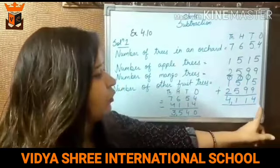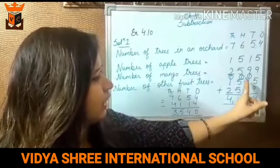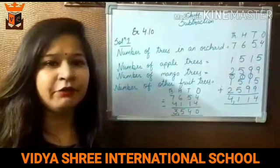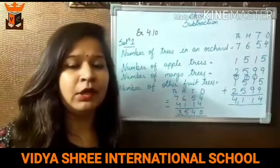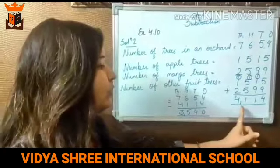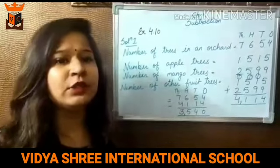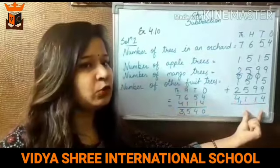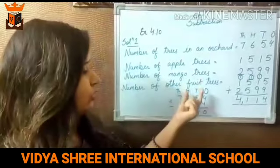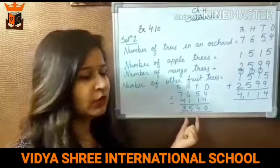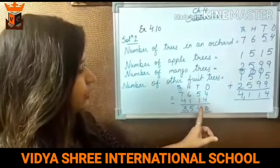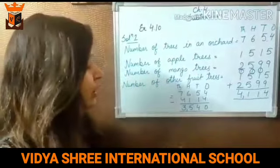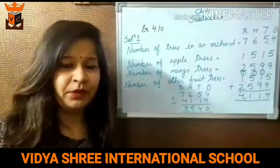5 plus 9 is 14 — write 4, carry 1. 1 plus 9 is 10, plus 1 is 11 — write 1, carry 1. 5 plus 5 is 10, plus 1 is 11 — write 1, carry 1. 1 plus 2 is 3, plus 1 is 4. So total apple and mango trees are 4,114. Now we subtract this from total trees: 7,654 minus 4,114. 4 minus 4 is 0, 5 minus 1 is 4, 6 minus 1 is 5, 7 minus 4 is 3. So total other fruit trees in the orchard are 3,540.